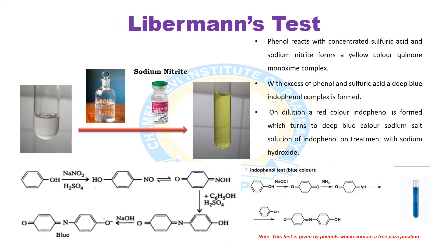The next test is the Liebermann test. Phenol reacts with concentrated sulfuric acid and sodium nitrite to form a yellow colored quinone monoxime complex. This monoxime complex produces color. With excess phenol and sulfuric acid, a deep blue indophenol complex is formed. On dilution, a red colored indophenol is formed, which turns to a deep blue sodium salt solution of indophenol on treatment with sodium hydroxide. This test is given by phenols which contain a free para position.